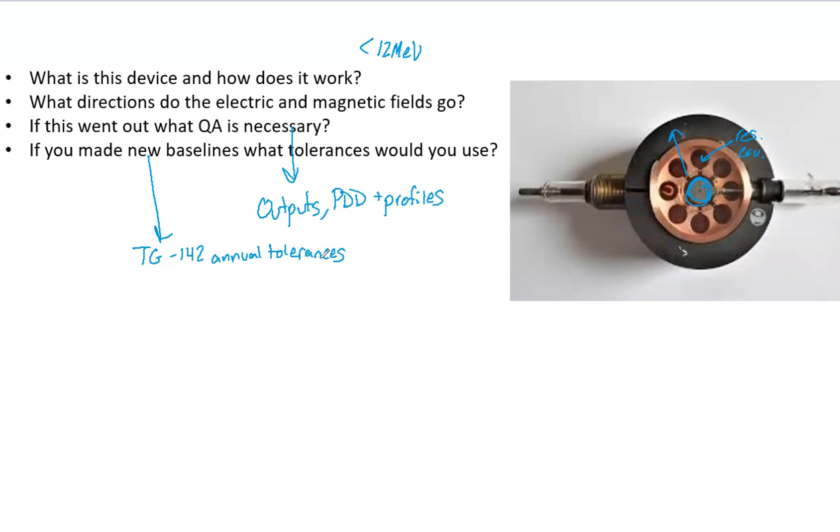The tolerances you want are the tightest tolerances you can get, because you are having to redo all of your outputs and percent depth doses and profiles. You are trying to replicate the original LINAC output and profiles, because those are what is in the treatment planning system.